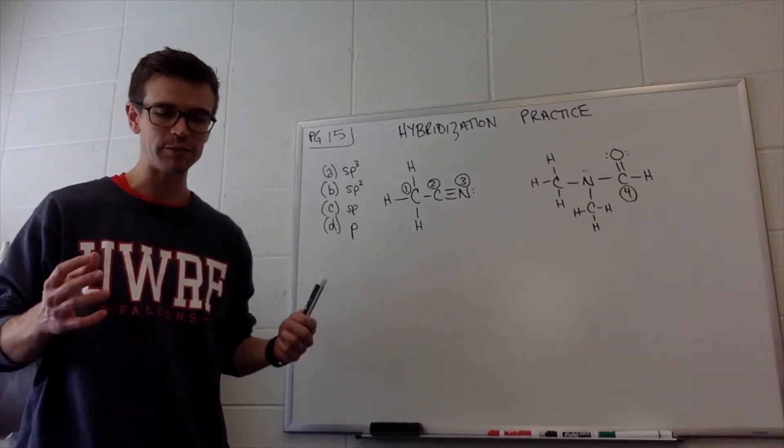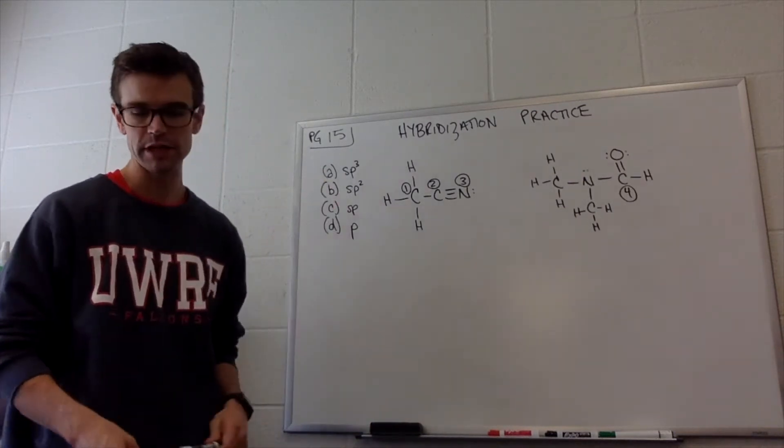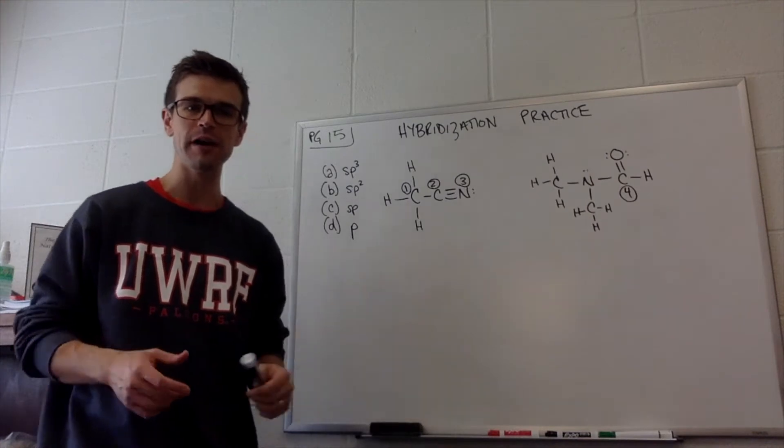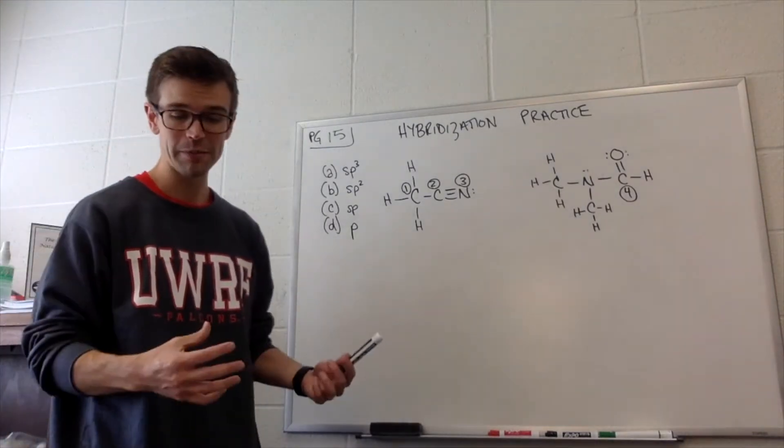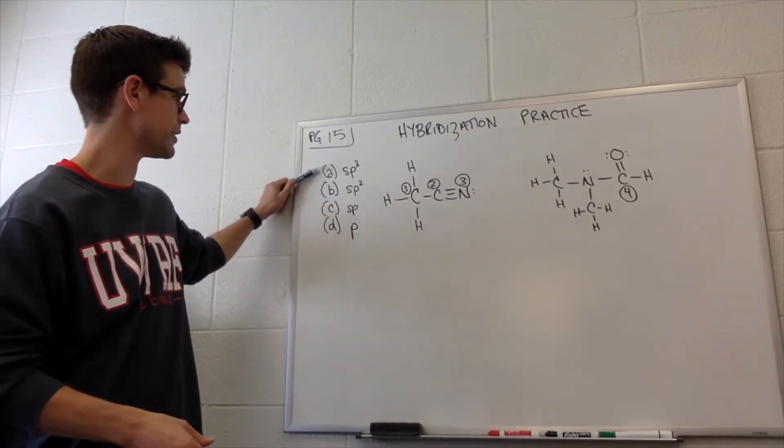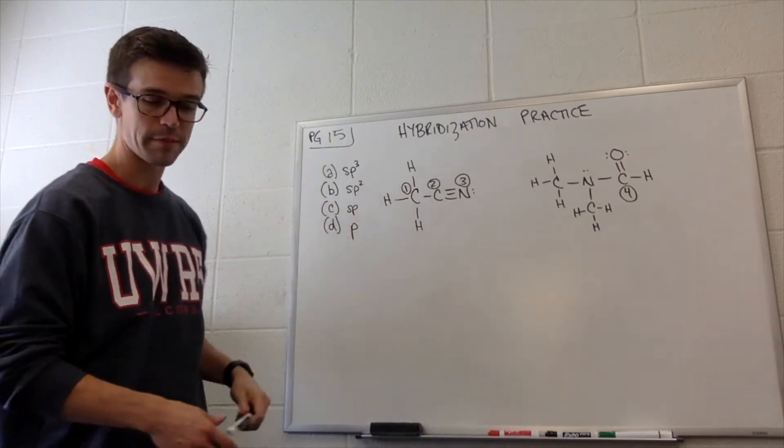All right, now we're going to do some hybridization practice. This is on page 15, right below that three types of hybrid orbitals table. It just says hybridization, question mark, and the choices are sp3, sp2, sp, and p.